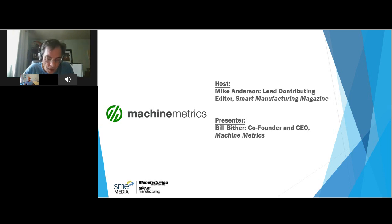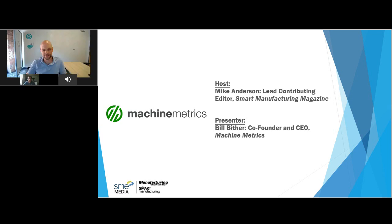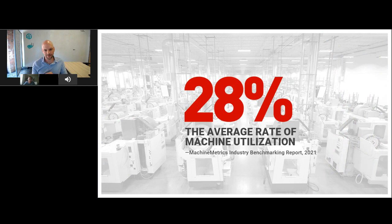I'll be rejoining you for our Q&A session later, but now I'm going to turn the microphone over to our presenter, Bill Byther. I thought of Machine Metrics back in 2015 really to solve a pretty significant problem in manufacturing, which is a lack of real-time visibility in terms of your manufacturing operations. There's been a lot of investment in automation like robotics and machinery, but when it comes to actually leveraging that data to drive efficiency, there's really a lack of connectivity on the factory floor. The average machine utilization rate across manufacturing is just 28%, based on thousands of machines we're actively connected to, as part of our annual state of the industry report.